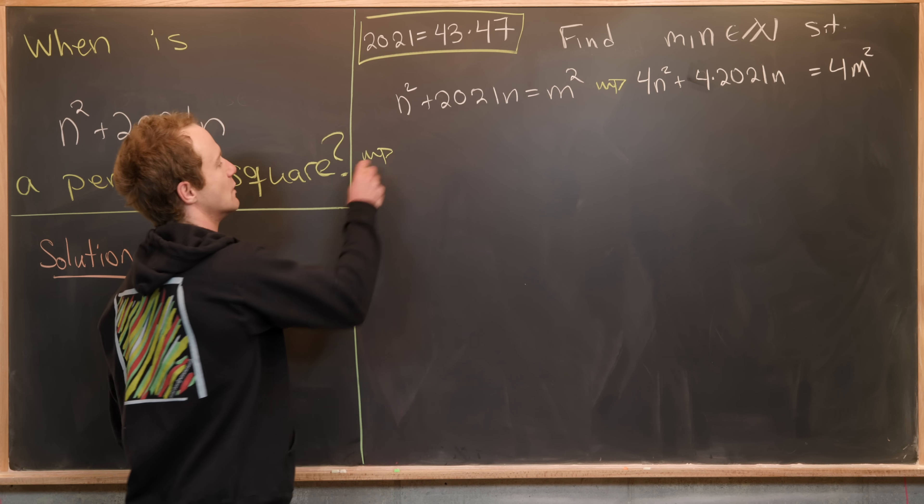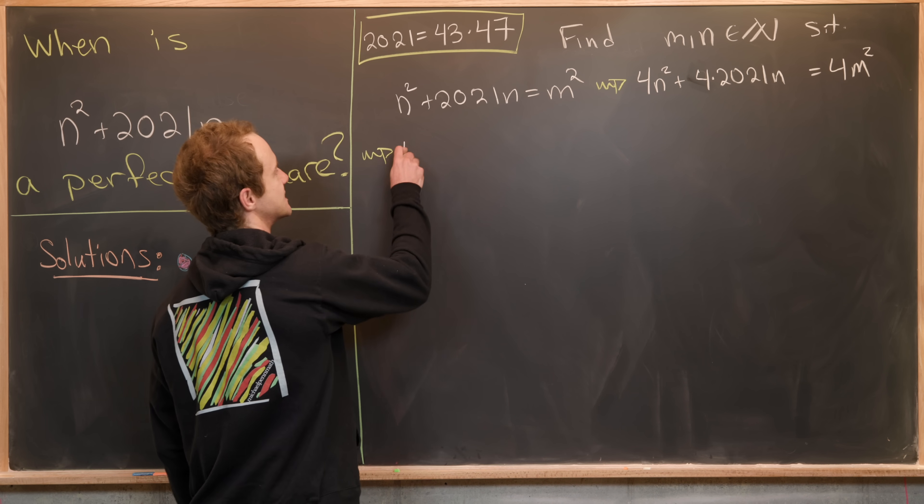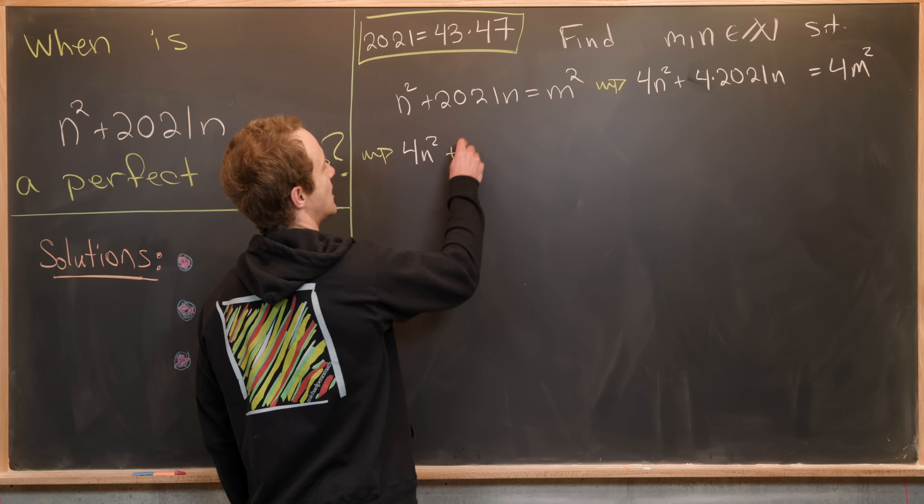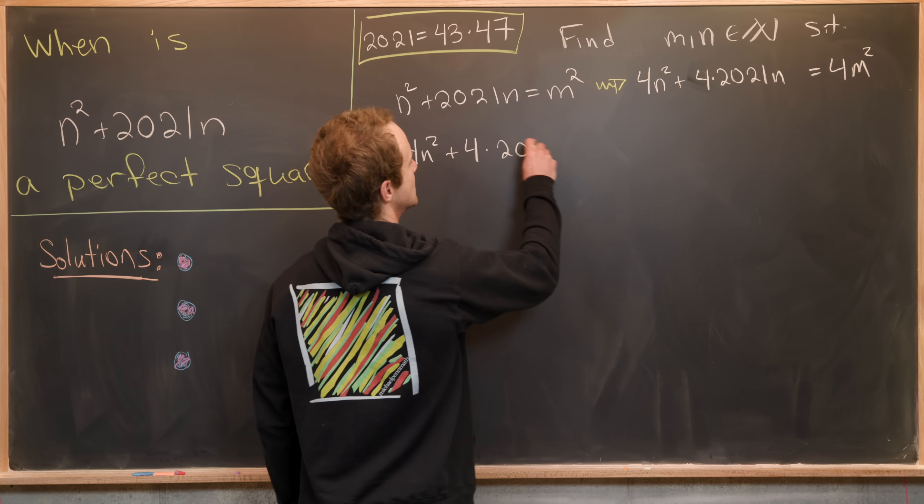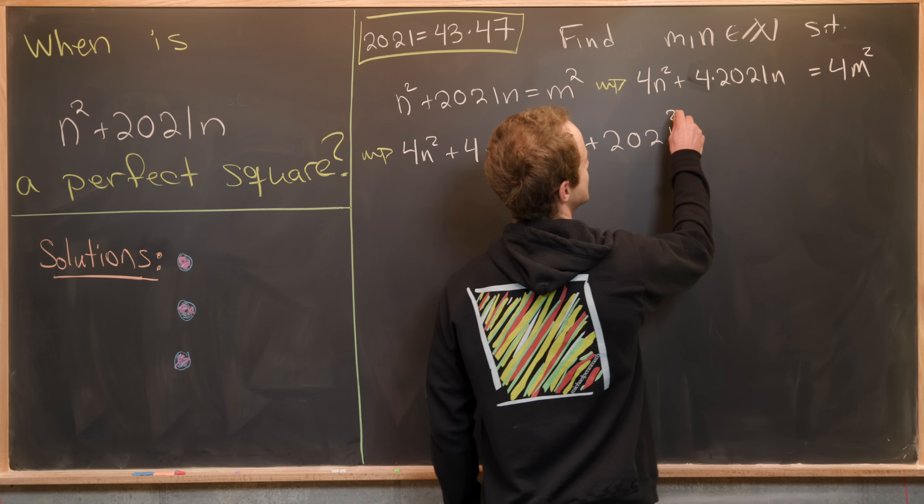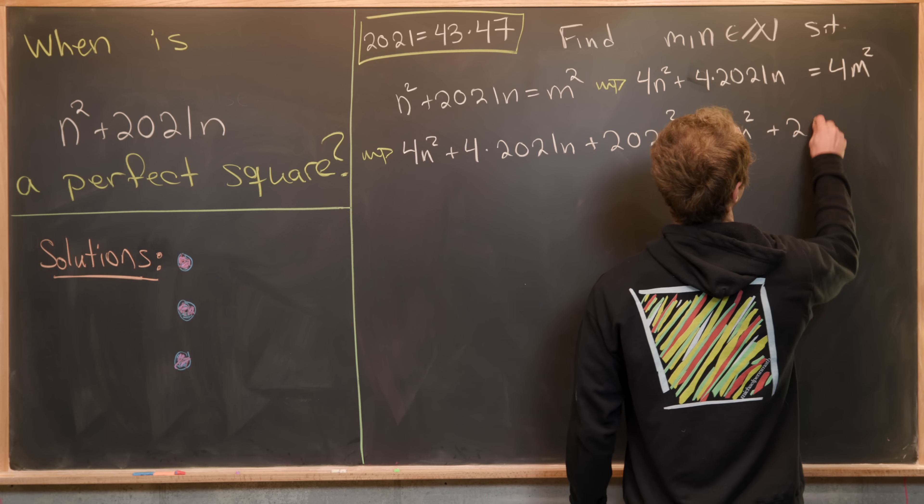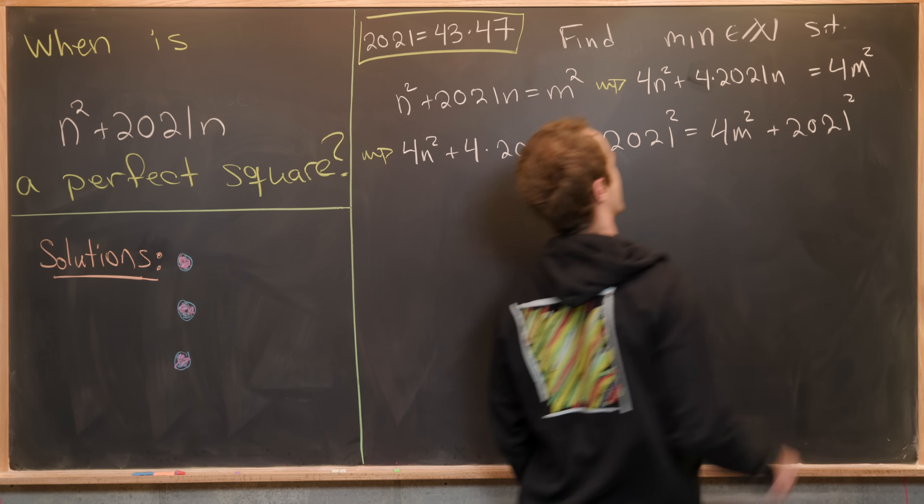So what constant will we add? Well, it'll be 2021 squared. So that gives us the equation 4n² + 4(2021)n + 2021² = 4m² + 2021².